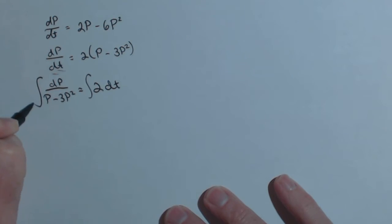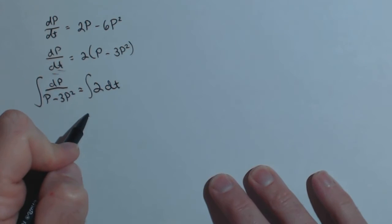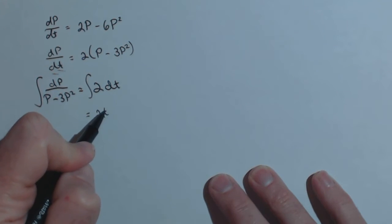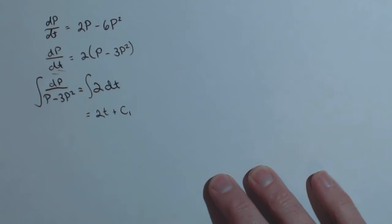And now we're going to take the antiderivative of both sides. This one is very nice and straightforward. It's just 2t plus c. I will be absorbing that constant so let's just call it c1.